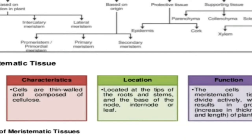Let us now discuss the meristematic tissue. The main characteristics of meristematic tissues are that they are very thin-walled cells composed of cellulose. They are found in the growing tips — meristematic means to divide. Basically, wherever division is going on — at the node, internode, and leaf — their function is to divide profusely and actively, resulting in growth: both increase in length as well as girth or thickness of the plant.